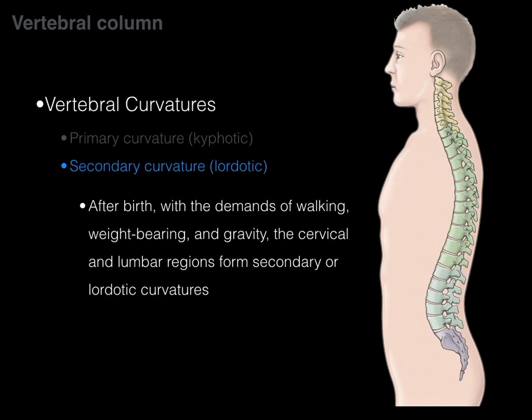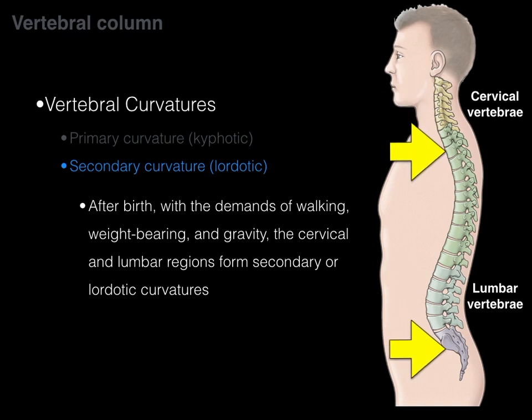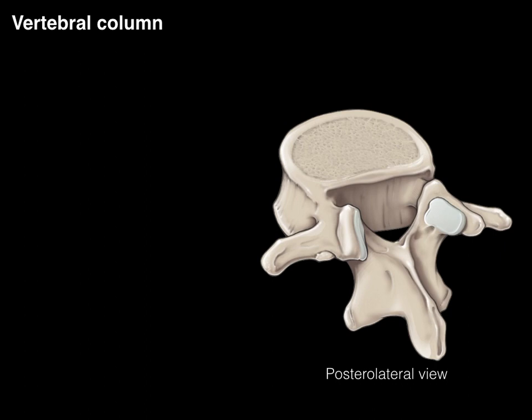After birth, with the demands of walking, weight, the brain, and gravity, the cervical and lumbar regions form a secondary curvature, also known as a lordotic curvature. In the cervical and lumbar regions, we see a curvature that curves toward the front — that is the secondary lordotic curvature.